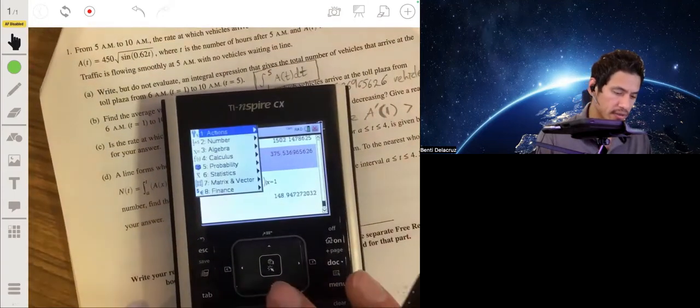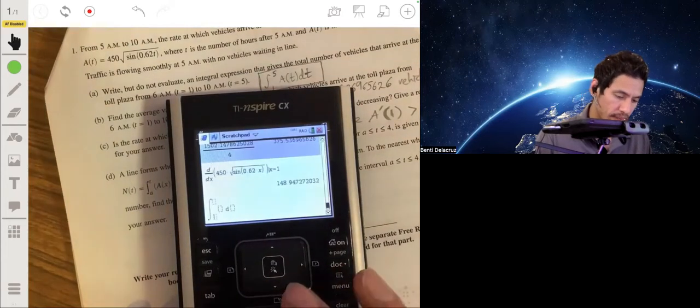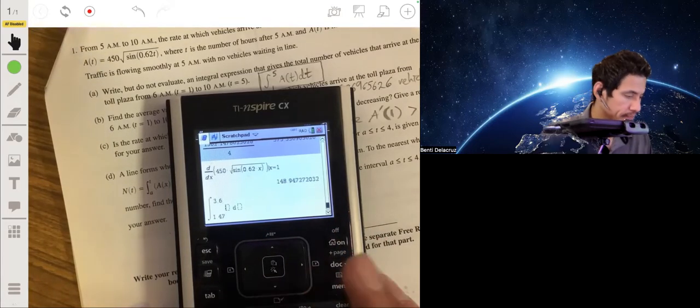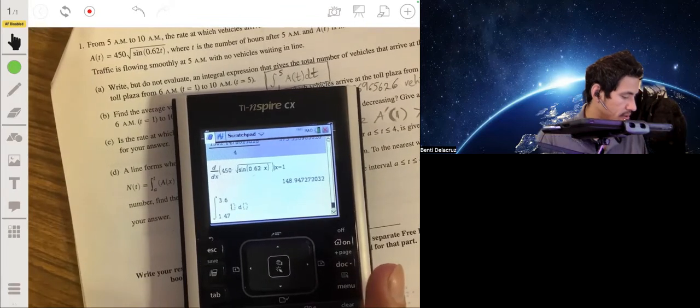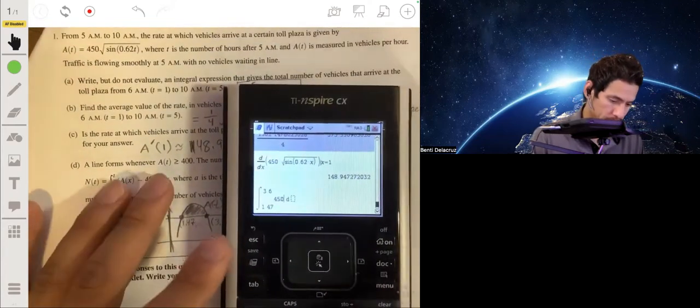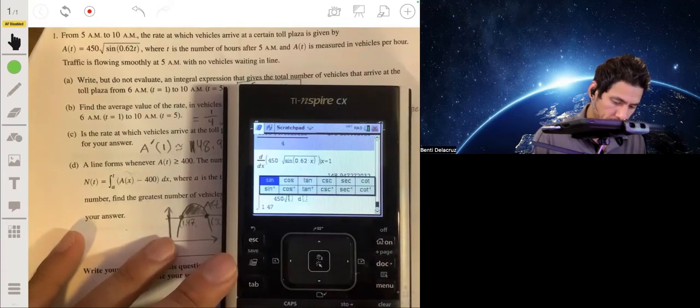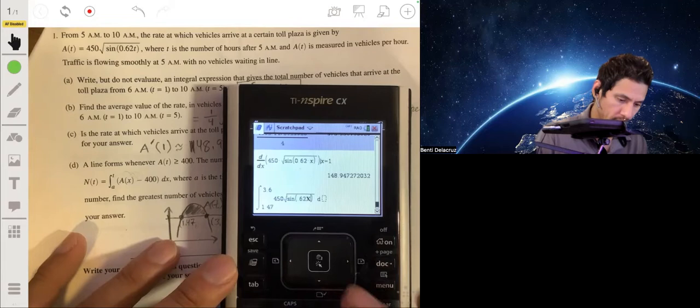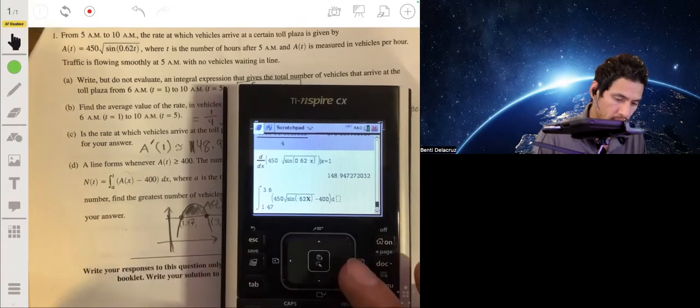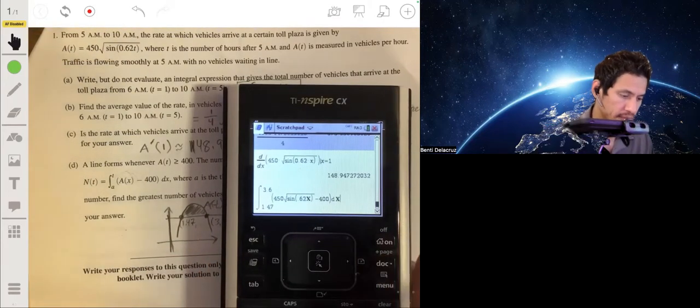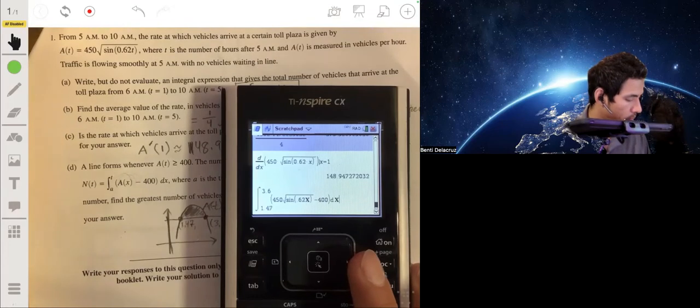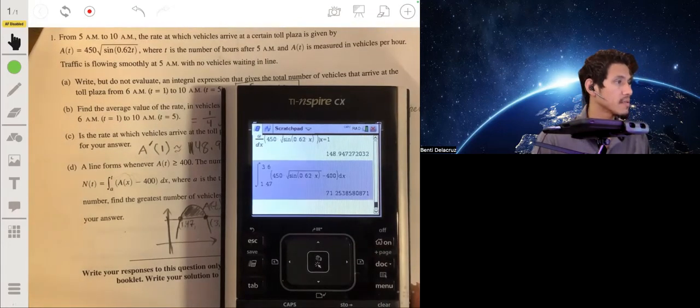Okay. So now again, let's go make our lives easier. And let's go to our calculus function. Numerical integral. 1.47 to 3.6. And we're going to evaluate N(t). So 450 times the square root of sine of 0.62x. We're going to do minus 400. Let's double check to make sure there's no mistakes in this. And then this should give us our answer. About 71.23.